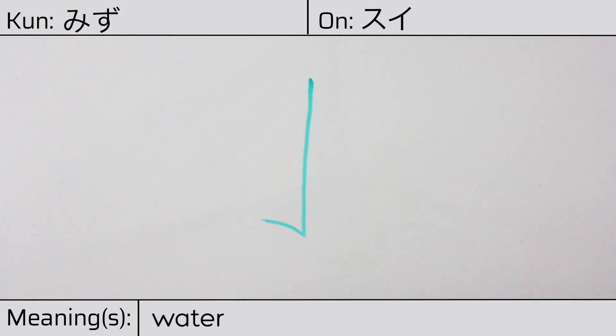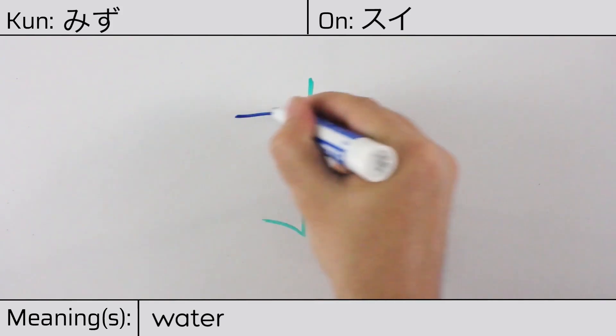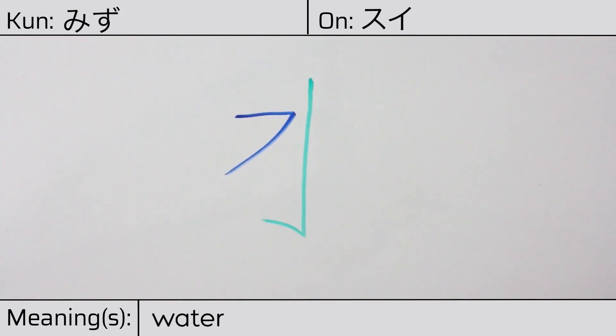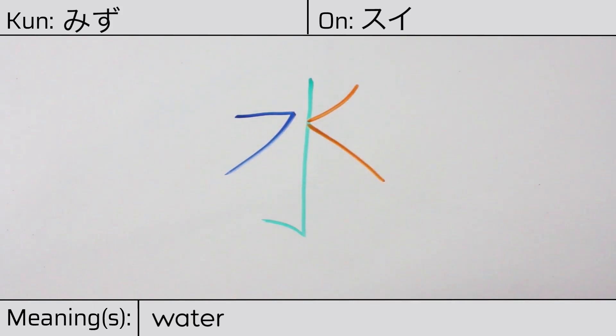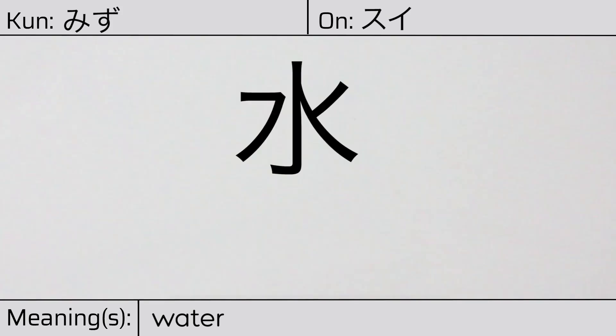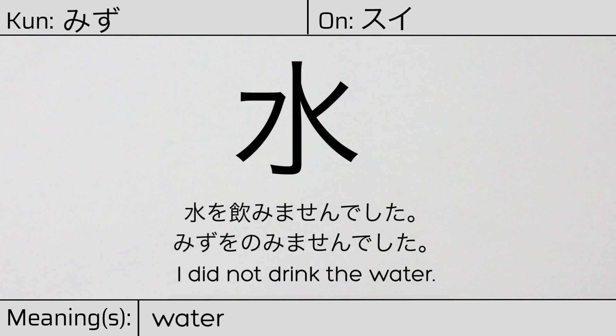This character is made up of the following radicals or parts: the hook radical hanebou in the middle, katakana fu on the left, followed by two individual strokes on the right. You can remember this kanji by thinking of it as water issuing from a tap or spigot. Our example sentence is: 水を飲みませんでした — I did not drink the water.